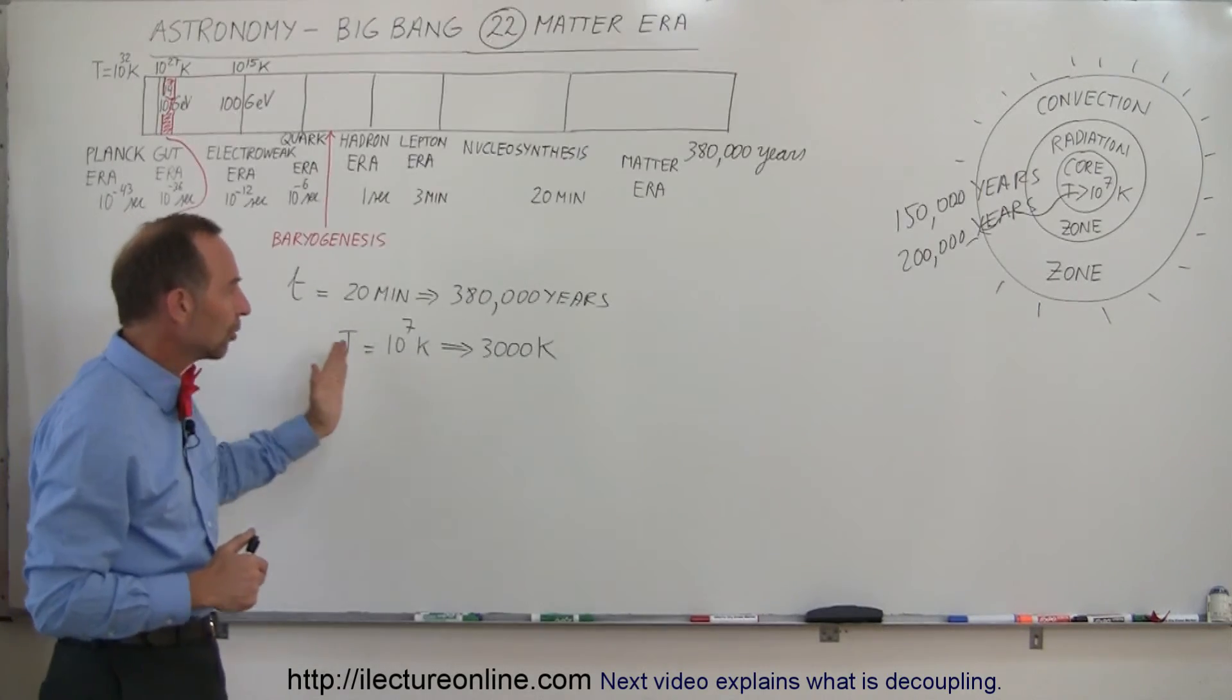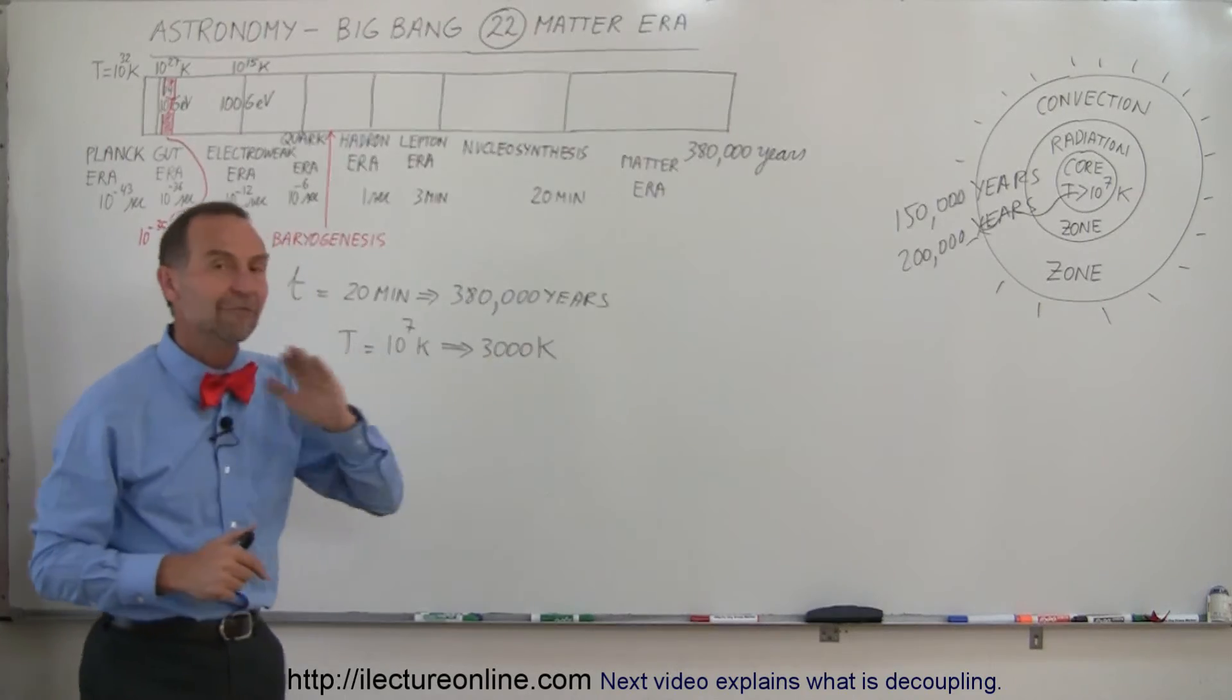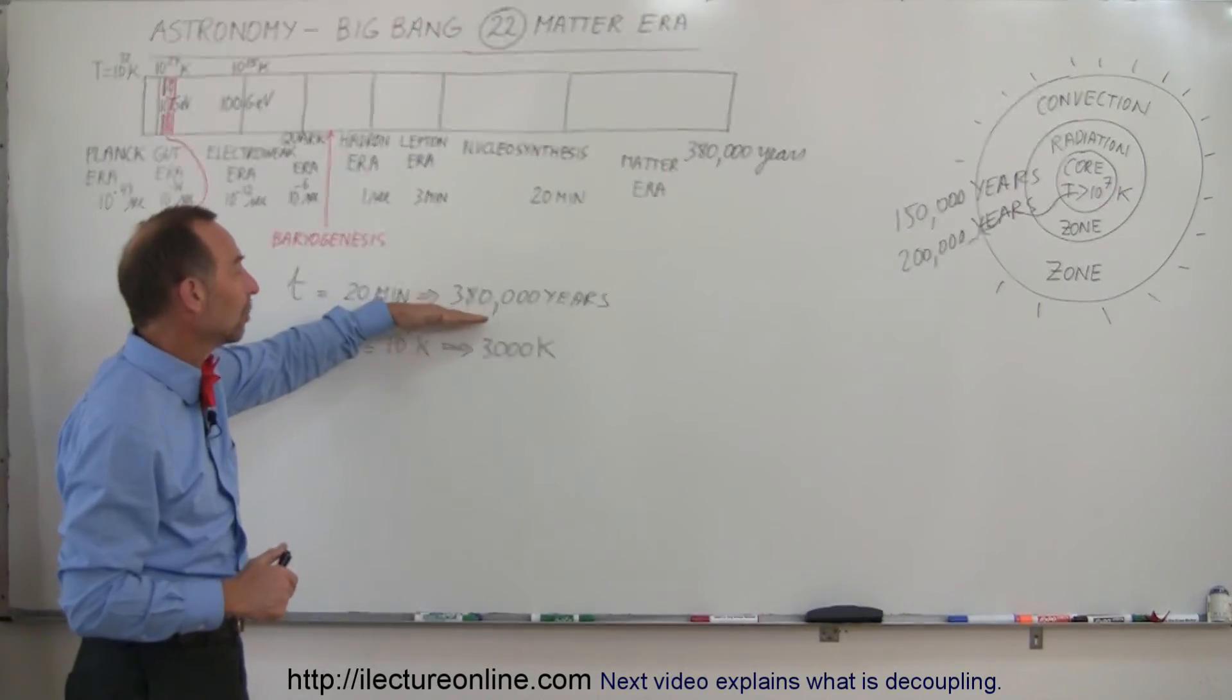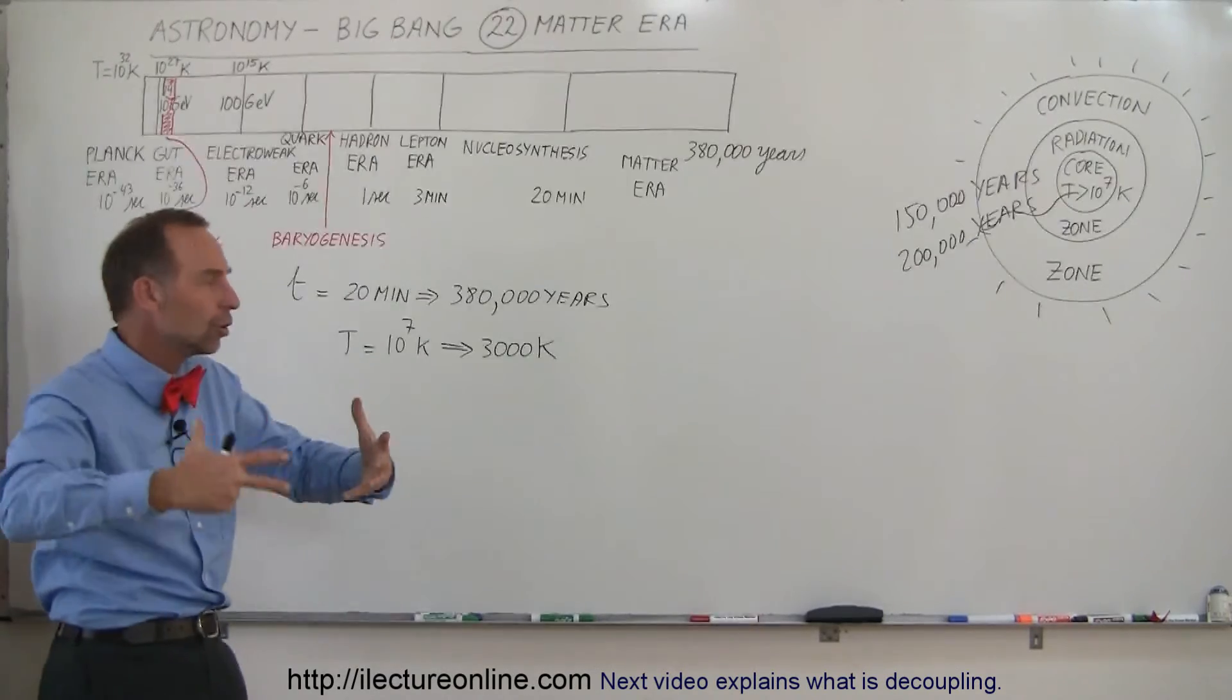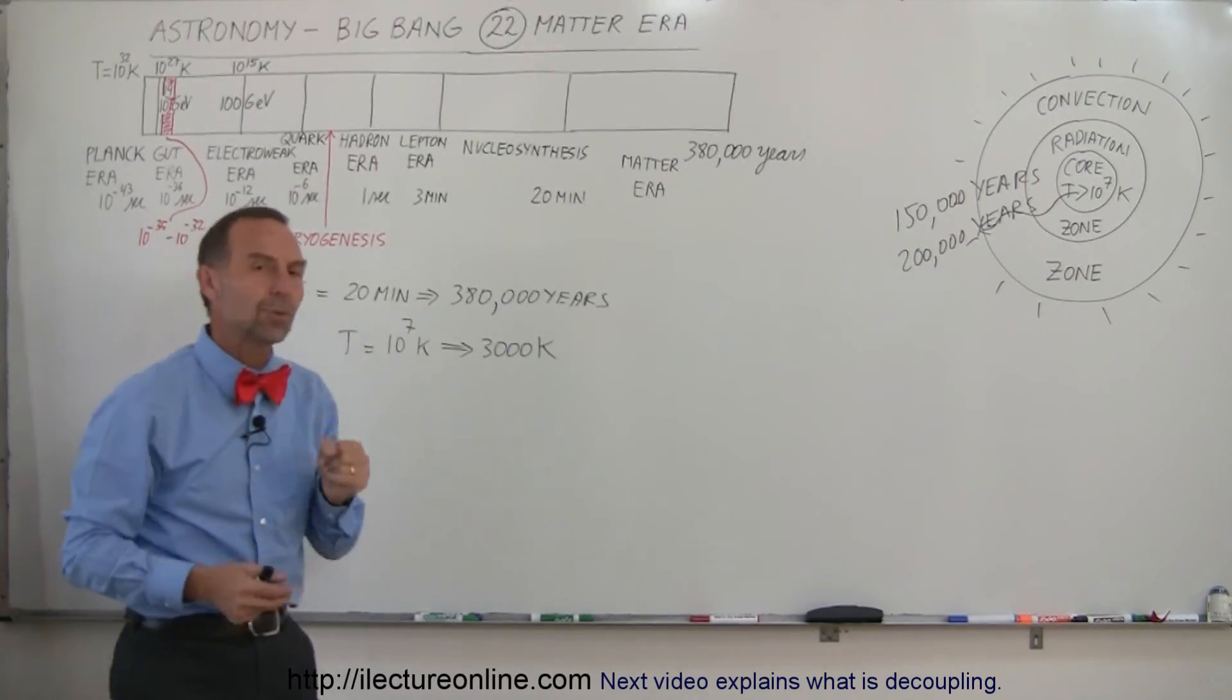And as the universe cooled over thousands and thousands of years, finally, when we got to the point where 380,000 years had passed since the beginning of the universe, since the Big Bang had unfolded the universe, the temperature had dropped to 3,000 Kelvin.